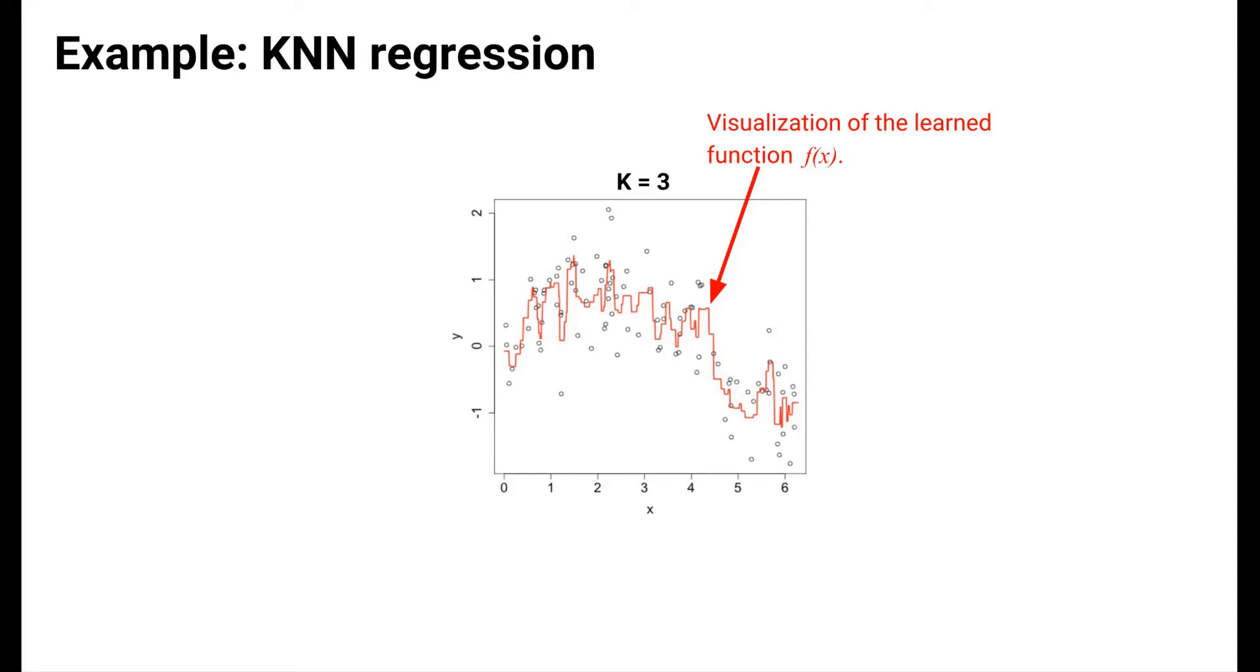We can repeat this process for all possible values of x. The curve shown in red shows the prediction we would make for any test set observation. We can also say that this is a visualization of the function f learned by a three nearest neighbors algorithm on this training data.